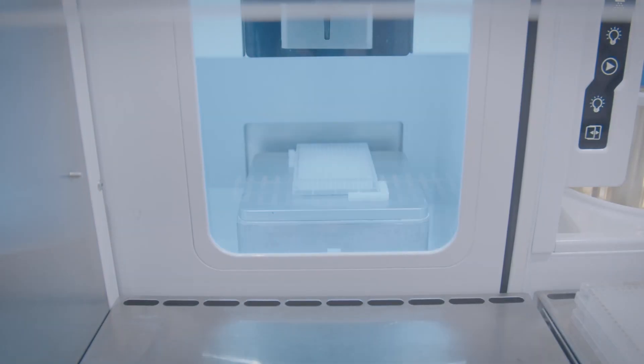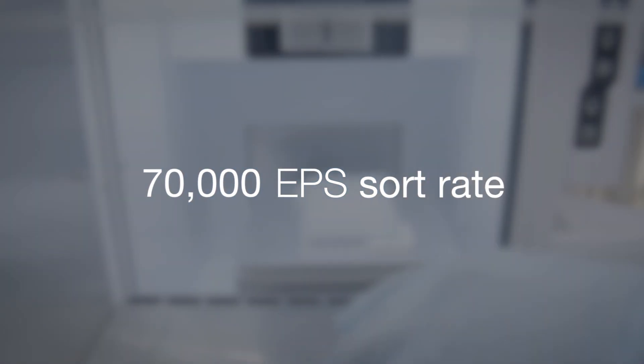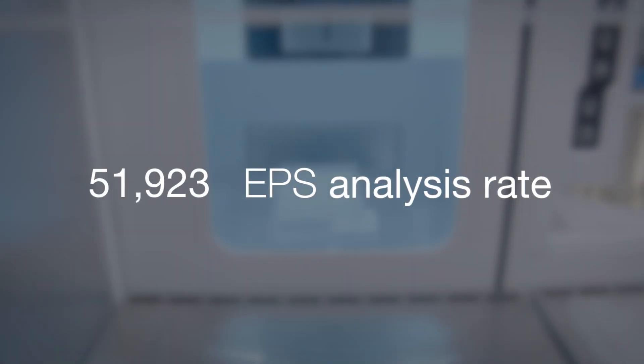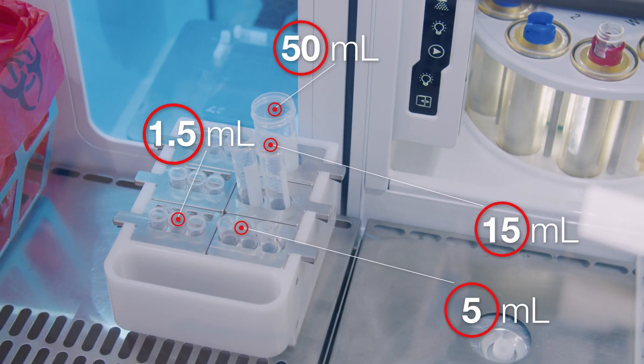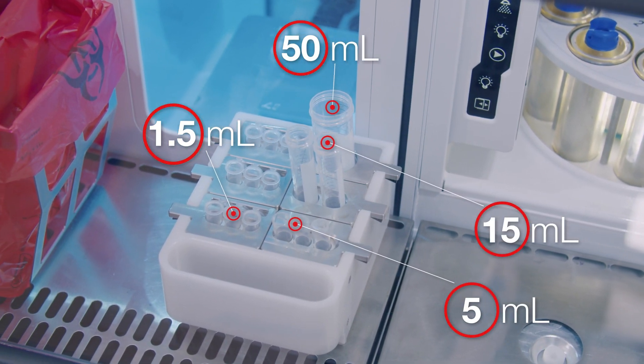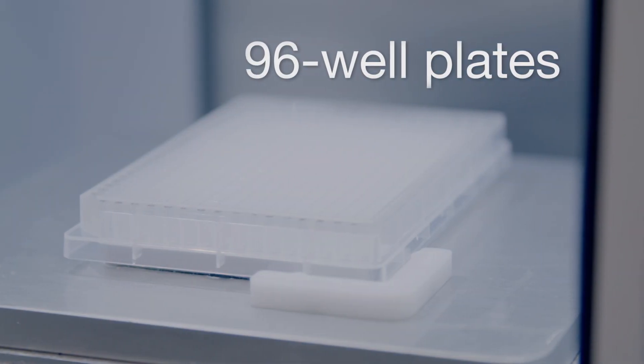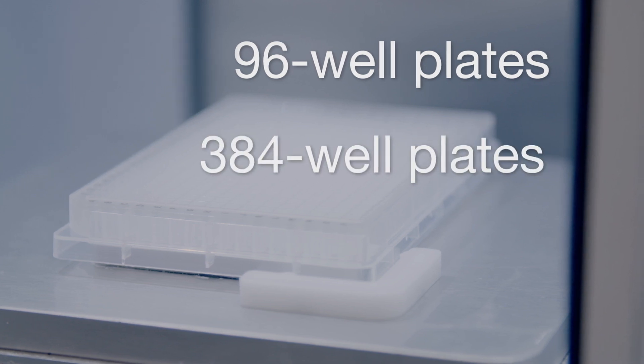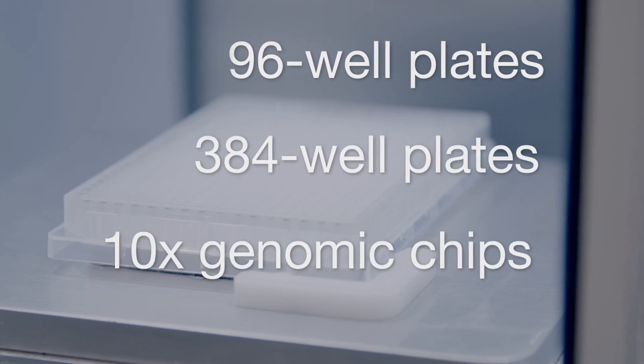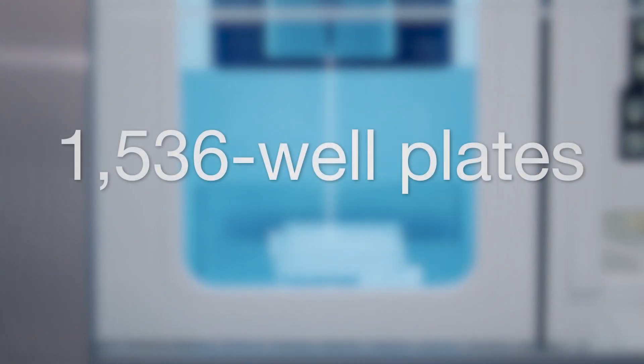The Bigfoot Spectral Cell Sorter offers sort rates of more than 70,000 events per second and analysis rates of more than 100,000 events per second. With multi-way sorting into tubes with an easily configurable sort output tube holder, the sorting flexibility extends to multi-way sorting into 96 well plates, 384 well plates, and 10x genomic chips, as well as being capable of straight-down sorting into 1536 well plates.